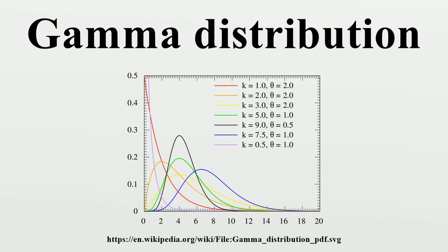Other related distributions: if X ~ Gamma(1, λ), then X has an exponential distribution with rate parameter λ. If X ~ Gamma(ν/2, 1/2), then X is identical to χ²(ν), the chi-squared distribution with ν degrees of freedom. Conversely, if Q ~ χ²(ν) and c is a positive constant, then cQ ~ Gamma. If k is an integer, the gamma distribution is an Erlang distribution and is the probability distribution of the waiting time until the k-th arrival in a one-dimensional Poisson process with intensity 1/θ.